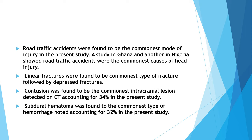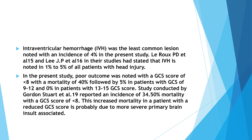A study in Ghana and another in Nigeria also showed road traffic accidents were the commonest causes of head injury. Linear fractures were found to be the commonest type of fracture, followed by depressed fractures. Contusion was the commonest intracranial lesion detected on CT, accounting for 34% in the present study. Subdural hematoma was the commonest type of hemorrhage, accounting for 32%. Intraventricular hemorrhage was the least common lesion, with an incidence of 4%.